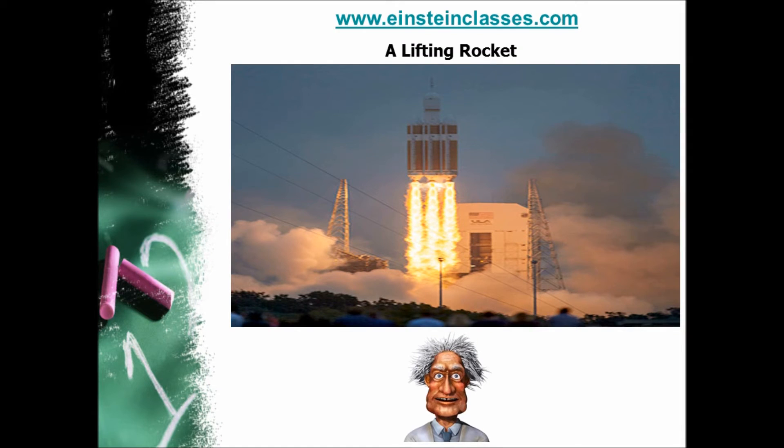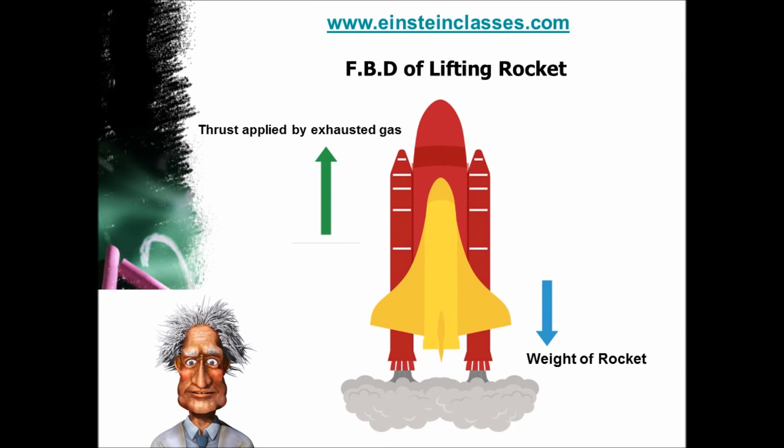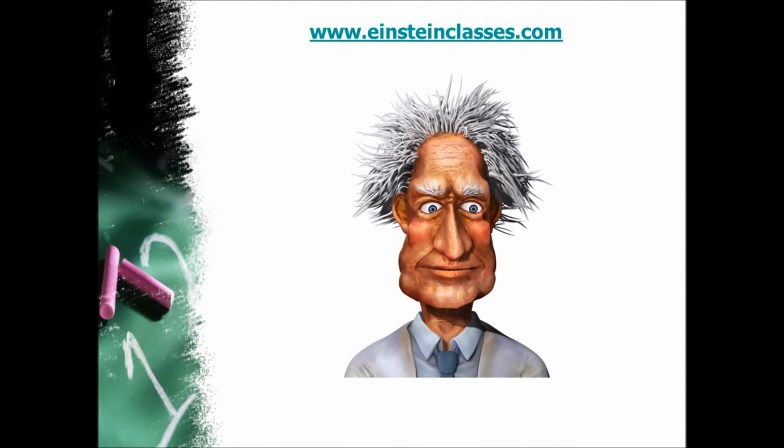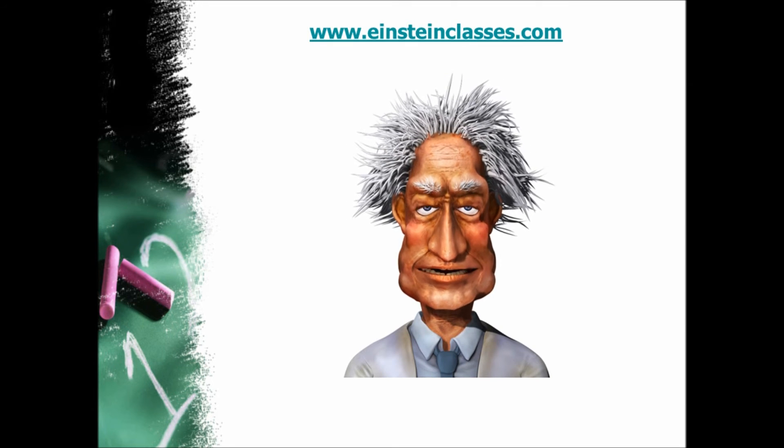The exhausted gas is applying a very strong force vertical upward, due to which the rocket lifts. This event will be further discussed in coming sessions. The FBD of rocket is shown in diagram. The force applied by exhausted gas is called thrust. You are able to draw FBD. Now take some quiz tests.